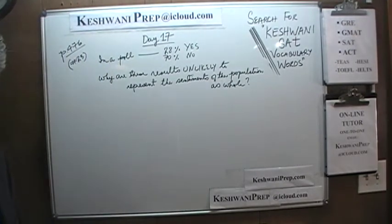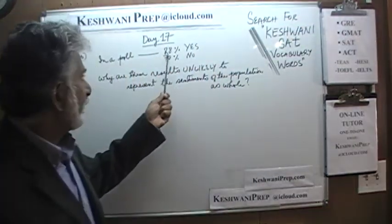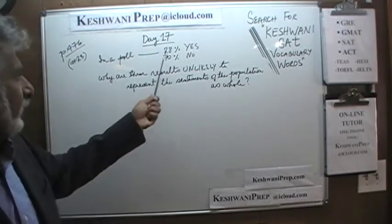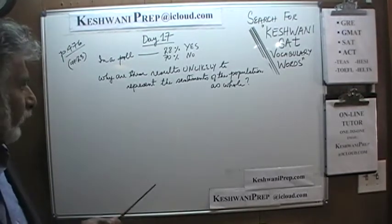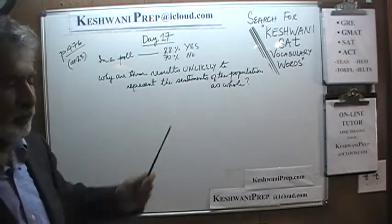The very first problem on page 476 is number 23. As you can see, it is already on the blackboard. What is going on in this problem is that there was apparently a cable news show, and at the end of the show, the host invited listeners to take part in a poll. The question asked was: are you in favor of this new government policy? People called in — 28% said yes, they were in favor; 70% said they were opposed. The question is: why are these results unlikely to represent the sentiments of the population as a whole?